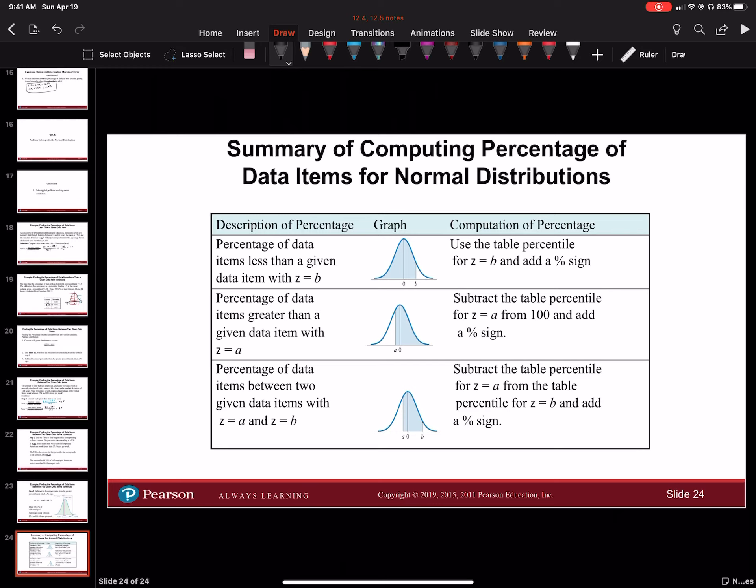The percentage of data items between two given data items with z equal to a and z equal to b: subtract the percent for z equal to a from the percent of z equal to b and add a percent sign. That's what we just did. We found two different z-scores, then we subtracted them, and that's how we found the percentage between them.